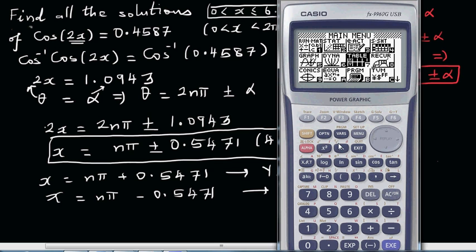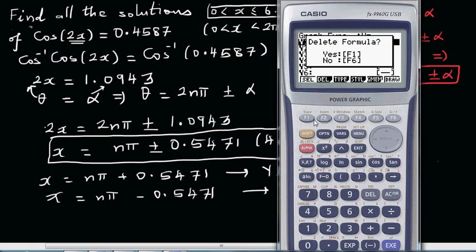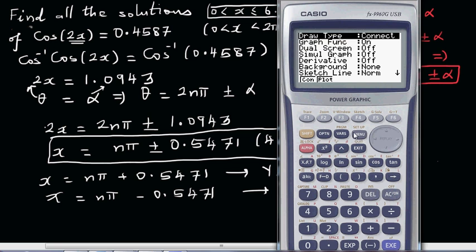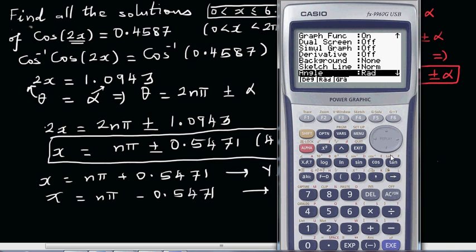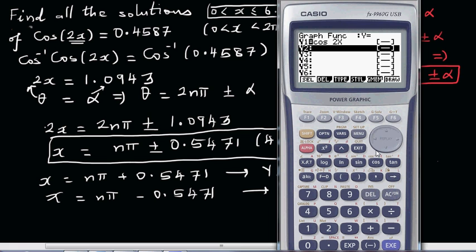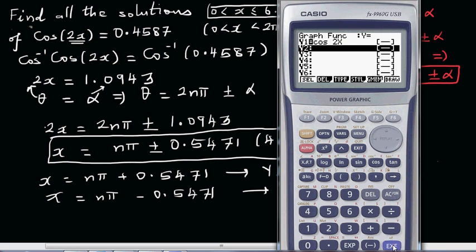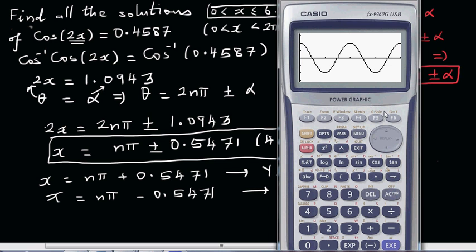Let's confirm this graphically. First let me go to graph, delete this, and type in cos(2x), just like that. I have to check my setting, it should be in radians, that's fine. Then I'll go from 0 to shift π and then graph it. You've got two cycles.